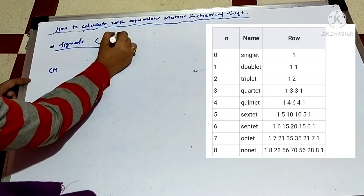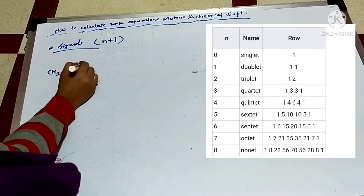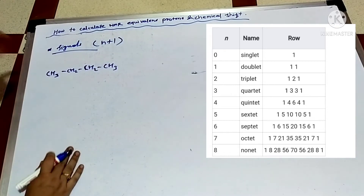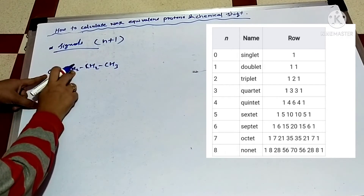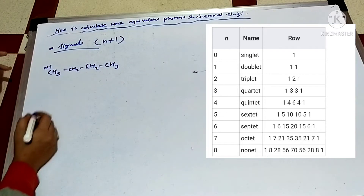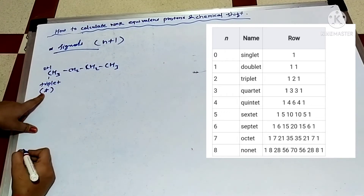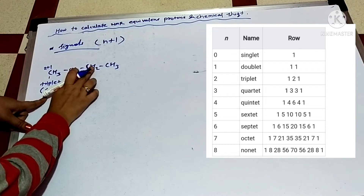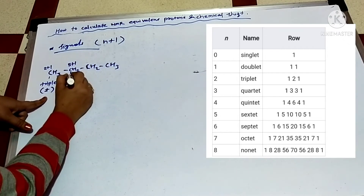Now let's see how to calculate signals. There is a rule: N plus one. Starting from one carbon, consider the adjacent carbon — it has two hydrogens. Two plus one equals three, so that gives a triplet. This signal is drawn as a small T for triplet. Here two hydrogens and three together: two plus three equals five, plus one equals six.